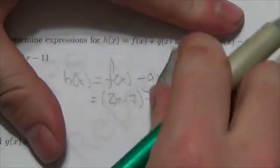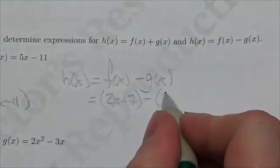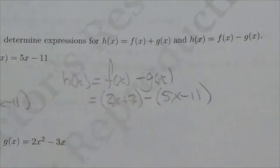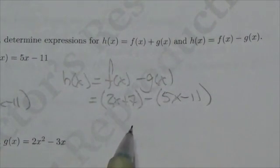I wanted to write 2x + 7 again, but it's 5x - 11. Now in this case right here,